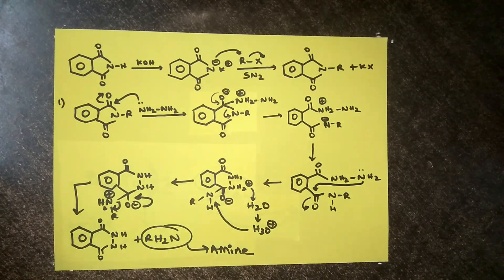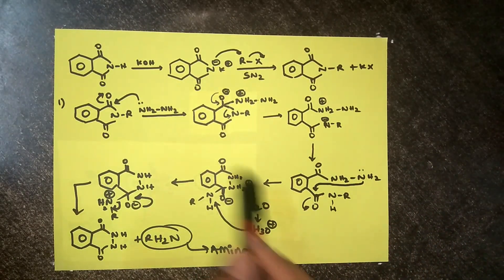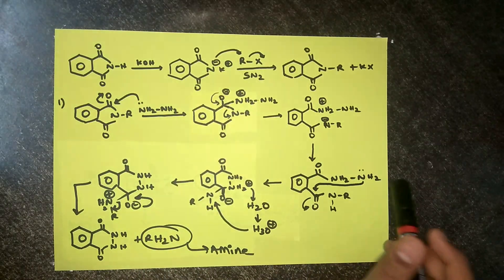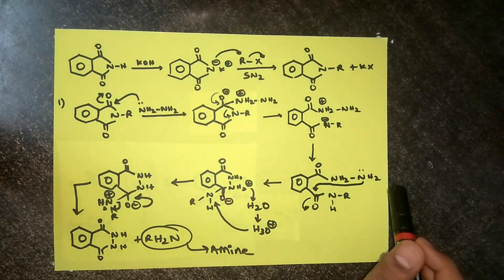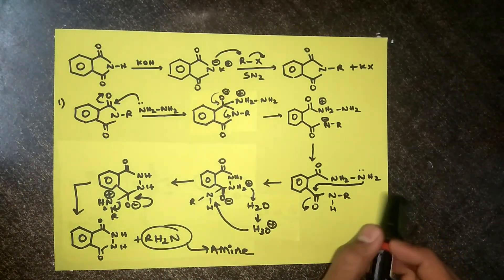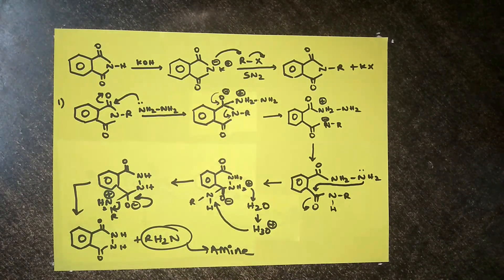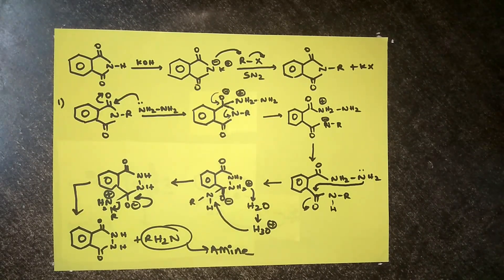We prepared amine from phthalimide using NH2-NH2, that is hydrazine. This can also be done by hydrolysis of phthalimide by acid and base-catalyzed mediums. For that reaction, check my other video on hydrolysis of amides.